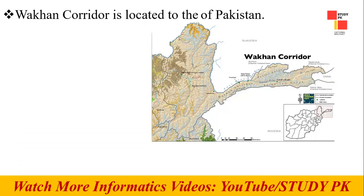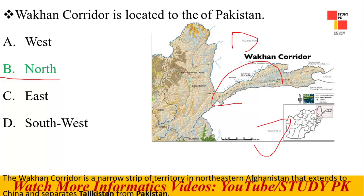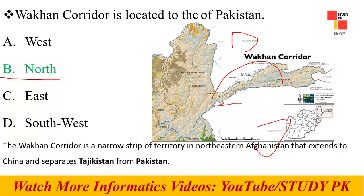Next question: The Wakhan Corridor is located to the north of Pakistan. The Wakhan Corridor belongs to Afghanistan, which separates Tajikistan from Pakistan. It is a narrow strip of territory in northeastern Afghanistan that extends to China and separates Pakistan from Tajikistan.